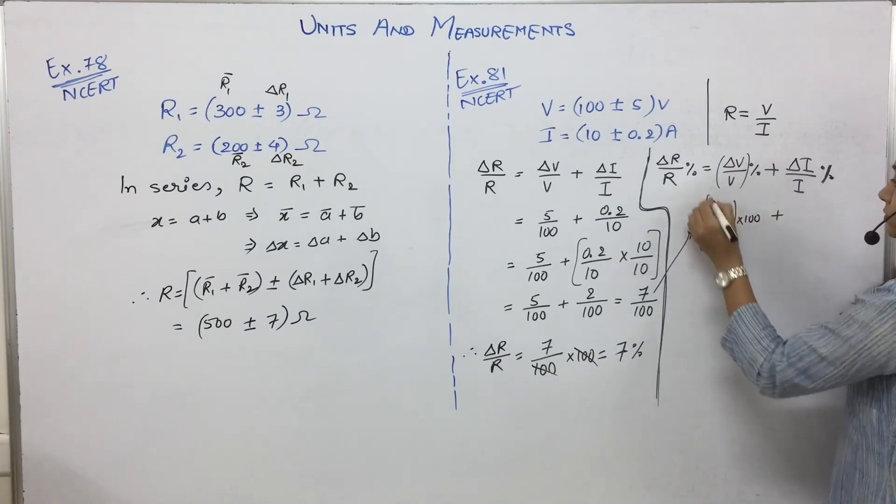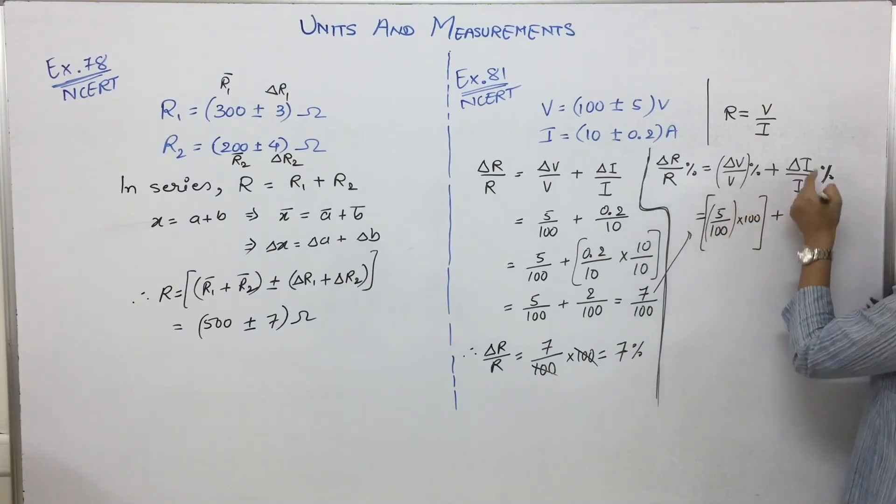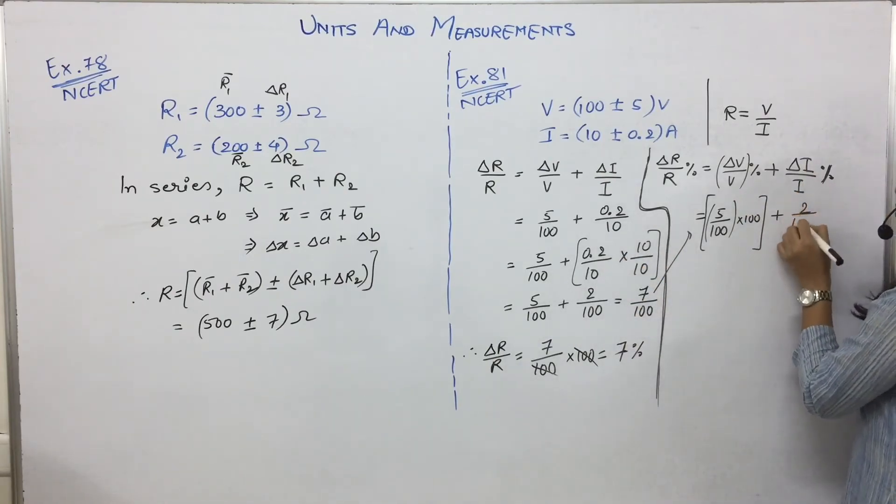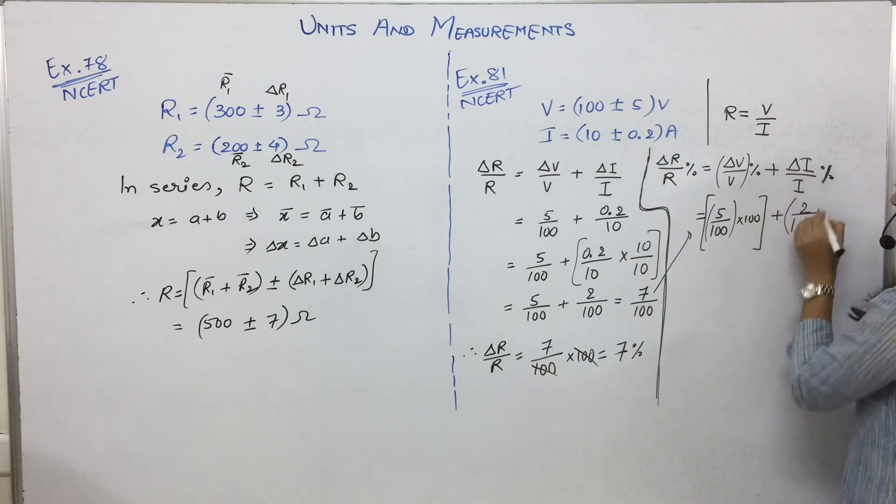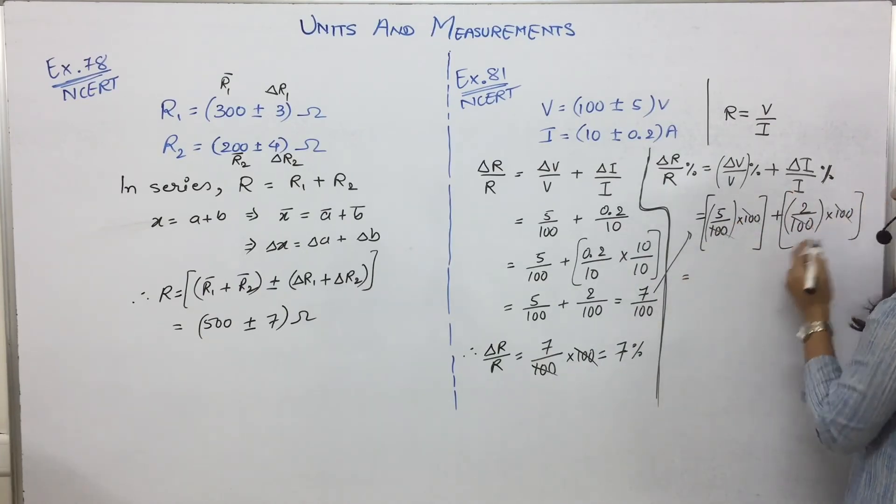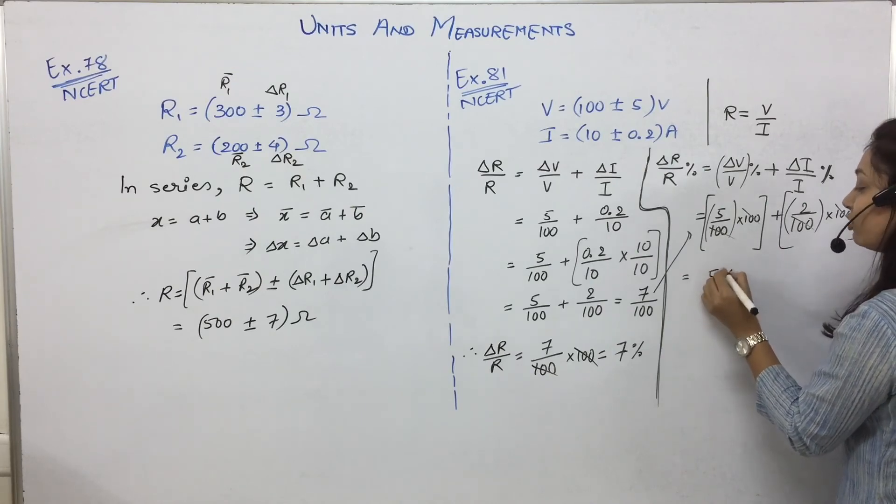Plus delta I by I. After all that calculation, I can directly write as 2 by 100. This is delta I by I into percentage, which means into 100. This is done. Now what happened? Cancel. So this is what? 5 percent.